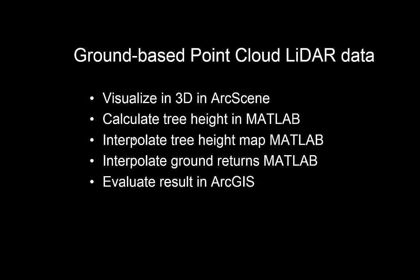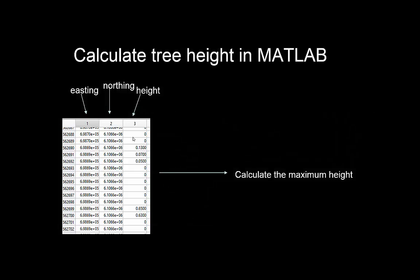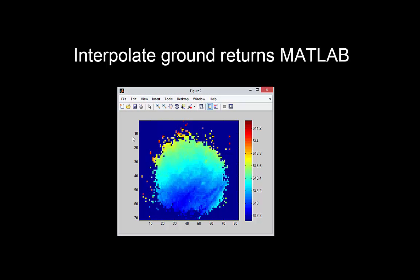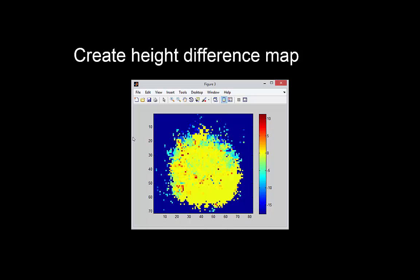Then we're going to do a similar thing using handheld ground-based LiDAR laser scanning data. Again we're going to visualize it, calculate tree height, interpolate it, and evaluate it in ArcGIS — and that will look something like this typically. The maps might look quite a bit different between the airborne and ground-based data, and one of the questions will be: if we compare the airborne and ground-based data, what do we see, what can we infer, and what might explain some of the differences we find in mapping?